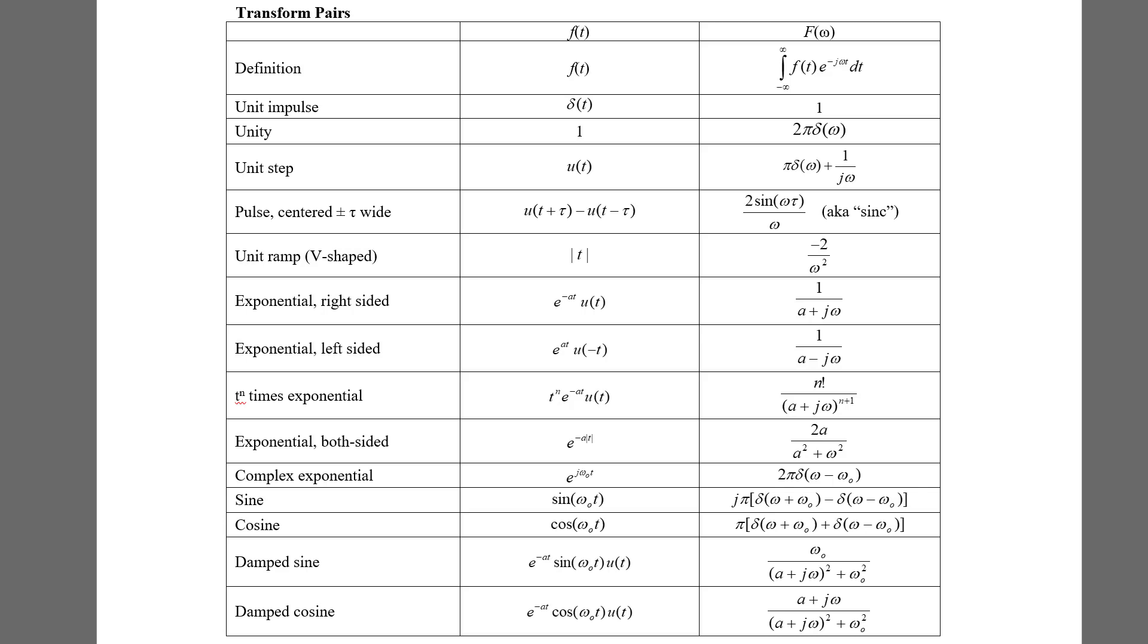These are the Fourier transform pairs we're going to use in our course. Notice how in the left column we've got the function in the time domain. On the right column we've got its Fourier transform. Here's the definition on the top column.